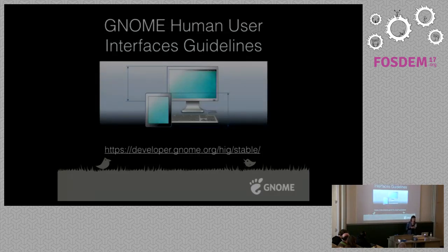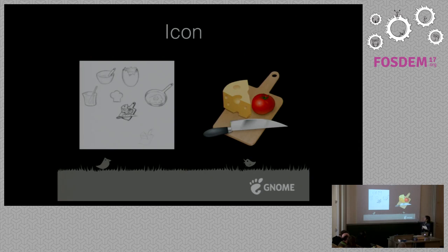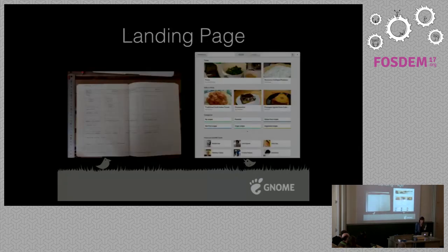Once you want to design an application for a platform you need a design language for that. This is our application icon — our visual designer Yakub wanted to do this for us. Those are the first sketches he did in the beginning, but at the end we have this logo. We have stickers here — you might want to get them at the end of the presentation. I'll walk you through the screens and show how the design evolved over time.